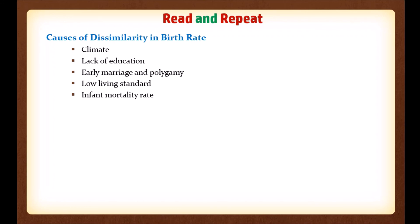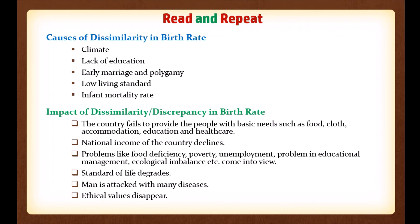Let's review today's lesson. We learned about the causes of dissimilarity in birth rate: climate, lack of education, early marriage and polygamy, low living standard, and infant mortality rate. We also learned about the impact of birth rate discrepancy: the country fails to provide basic needs such as food, clothing, accommodation, education, and healthcare; national income declines; problems like food deficiency, poverty, unemployment, problems in educational management, and ecological imbalance emerge; standard of life degrades; people are attacked with many diseases; and ethical values disappear. Thank you everyone for your patience.